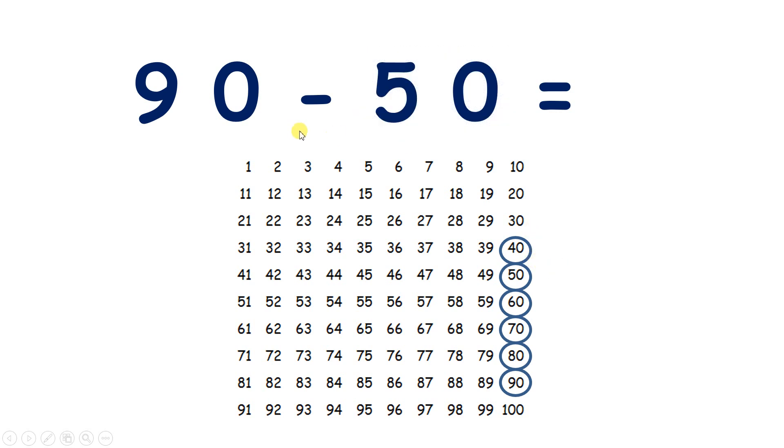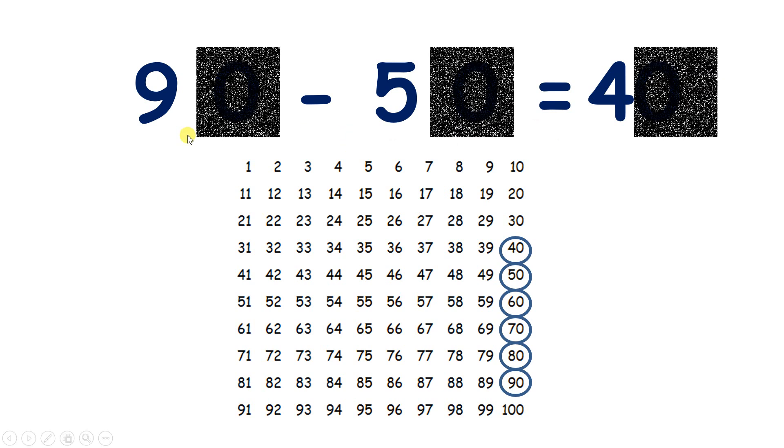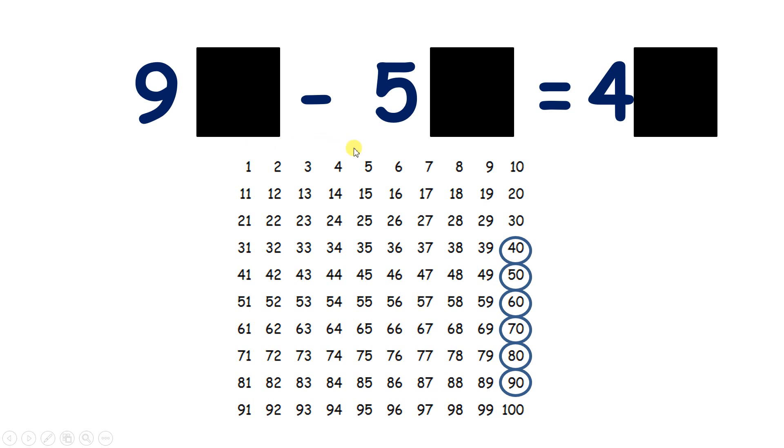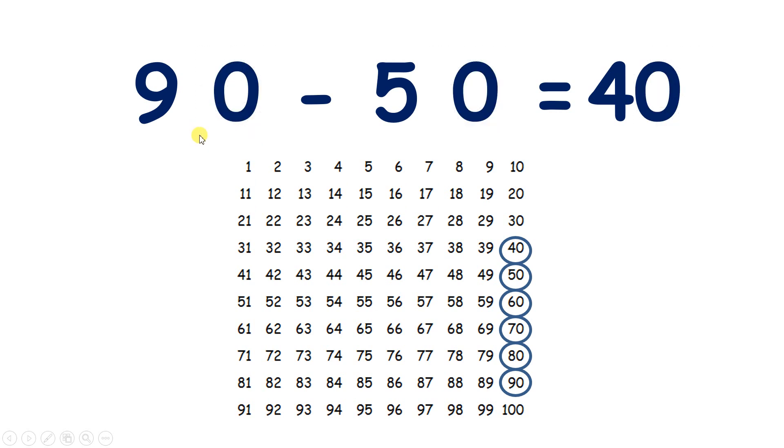So 90 minus 50 is 40. And how could we work this out mentally without a 100 square? Well, if we know that 9 minus 5 is 4, then we can be sure that 9 tens minus 5 tens is 4 tens.